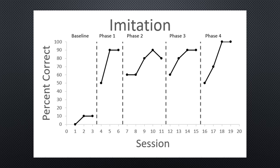Here we have the final look of our graph. This graph has all of the essential components: axis titles, a chart title, phase labels, X and Y axes, data points, and phase change lines. This concludes today's video on task list item A5.